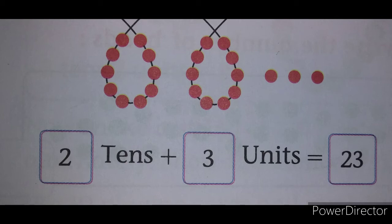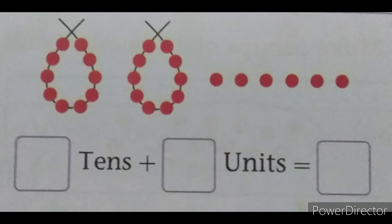See, first example here, group of 2 tens and 3 single units, so 23. 2 tens and 3 units. Now, next example: 2 tens and 6 units. 2 tens and 6 units, 26.